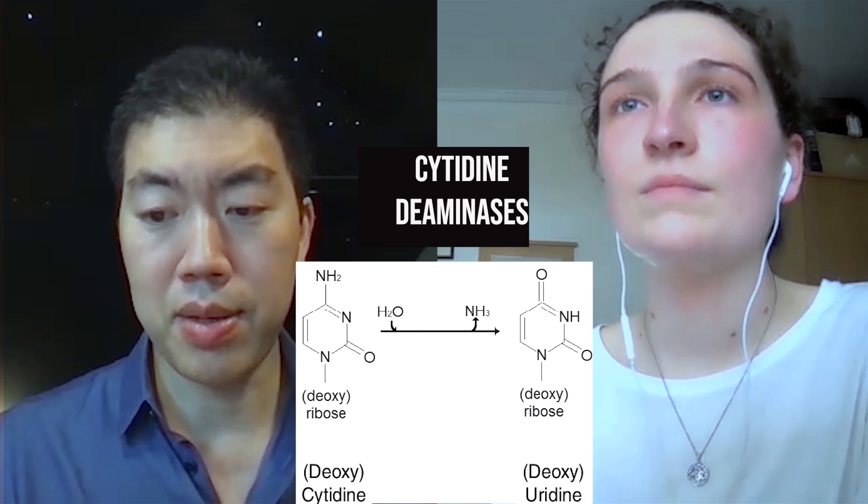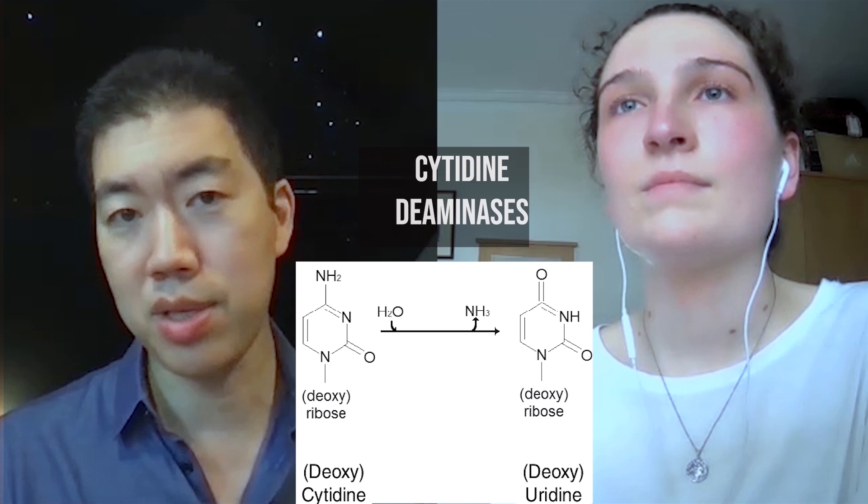We began to brainstorm how to do this. We quickly focused on cytidine deaminases — enzymes known to turn C's into U's, and U's of course pair like T's. Alexis raised the very good point that these deaminases seem to work on single-stranded DNA, and of course most genomic DNA is not single-stranded.